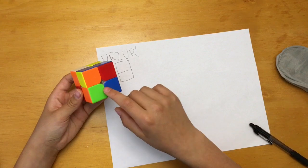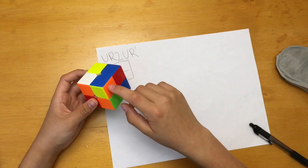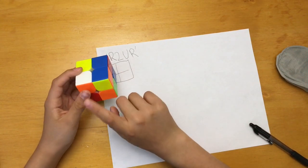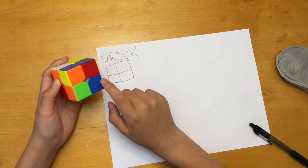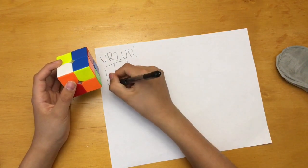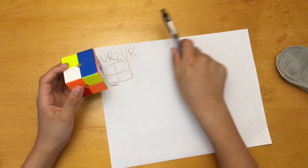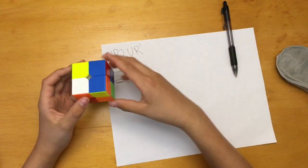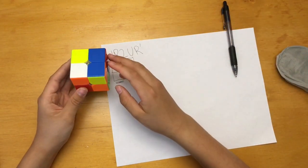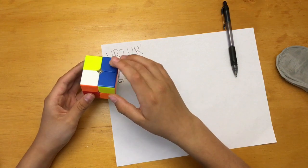U does nothing to it and then R2, then another U R', so this piece will go to right here. Then we can do another one, let's track this one, no this one because it will be affected by the R's.